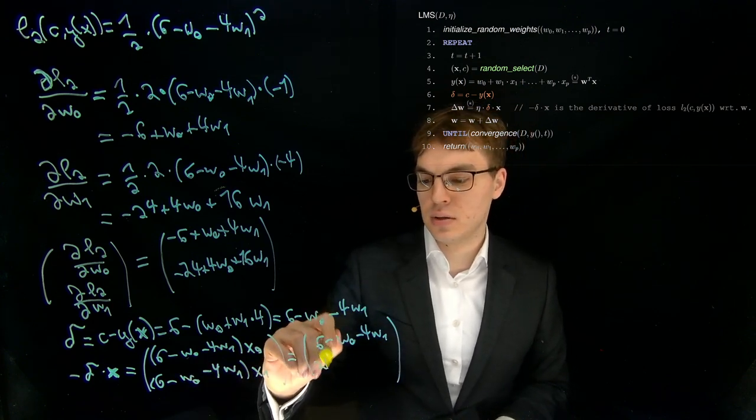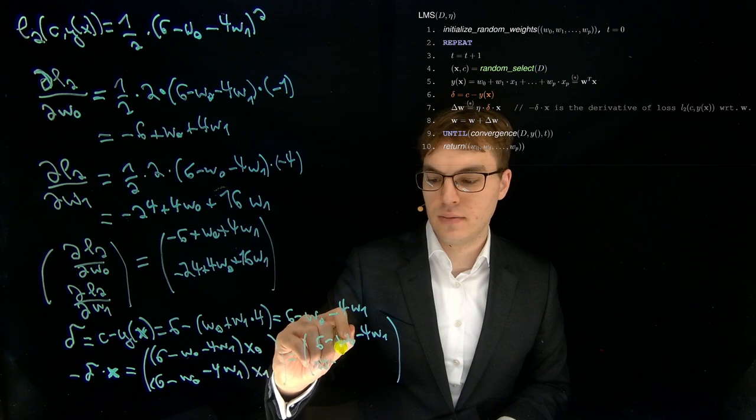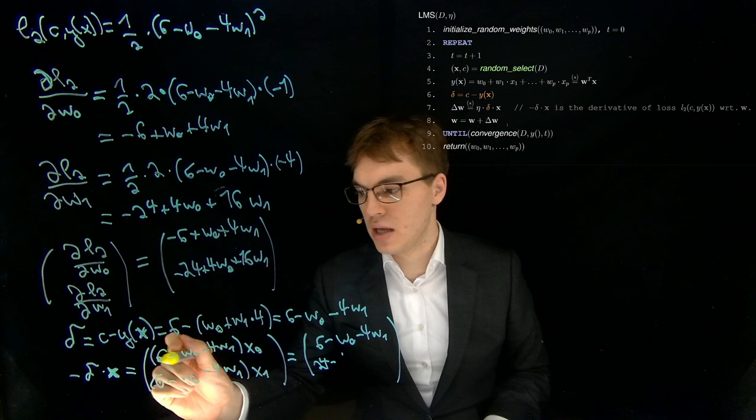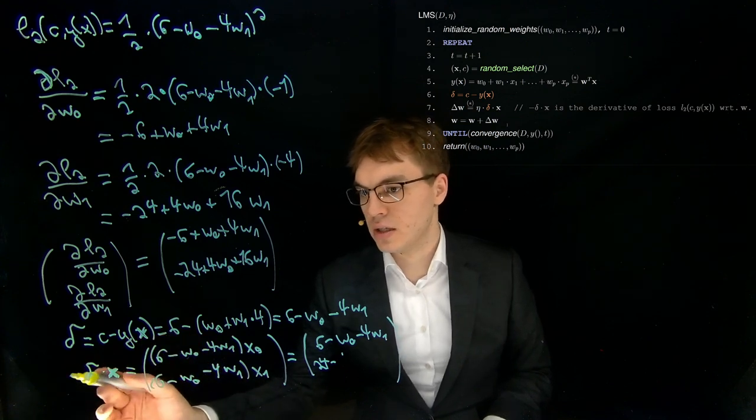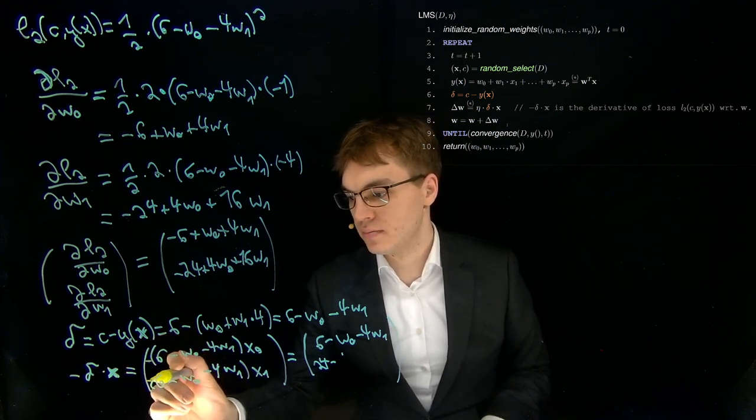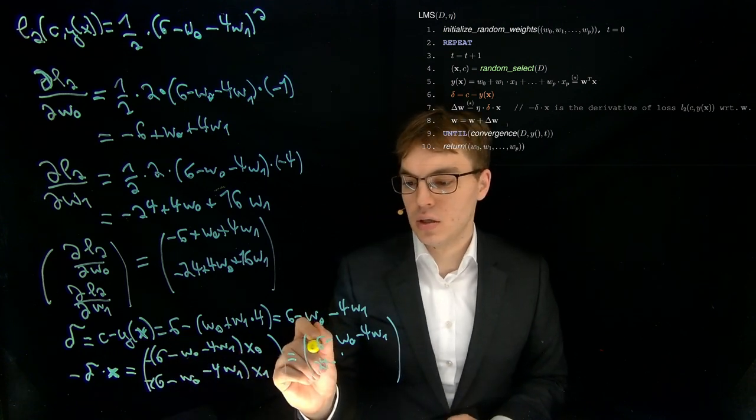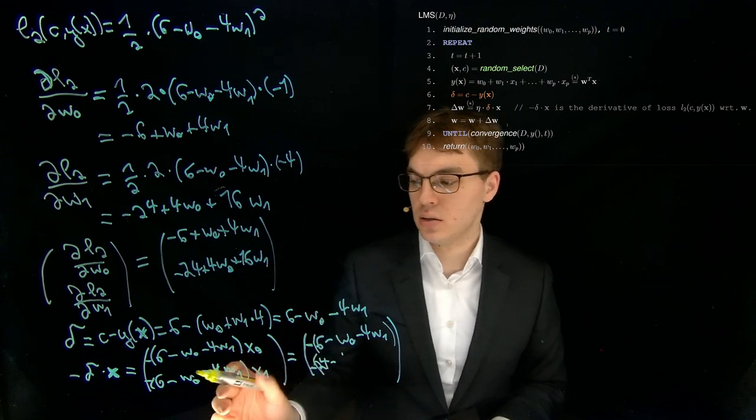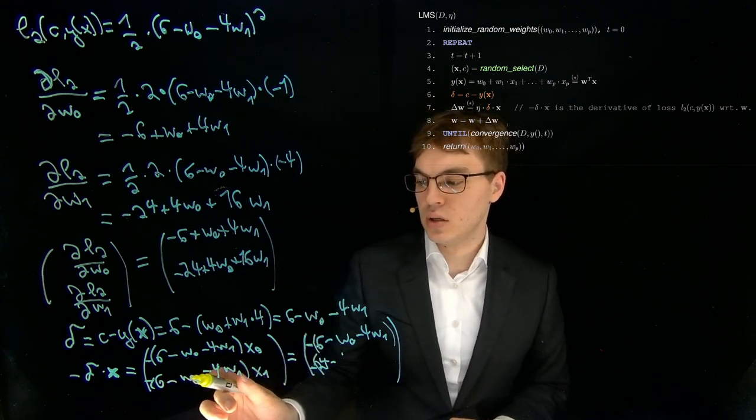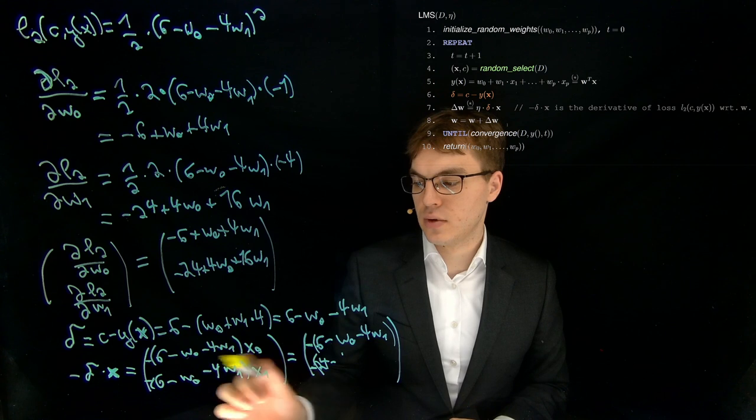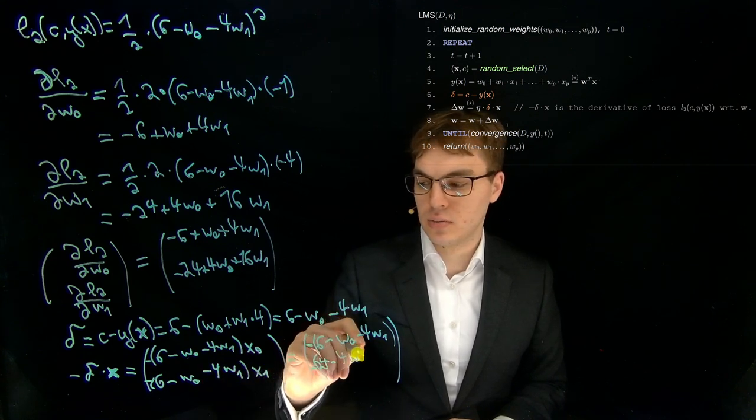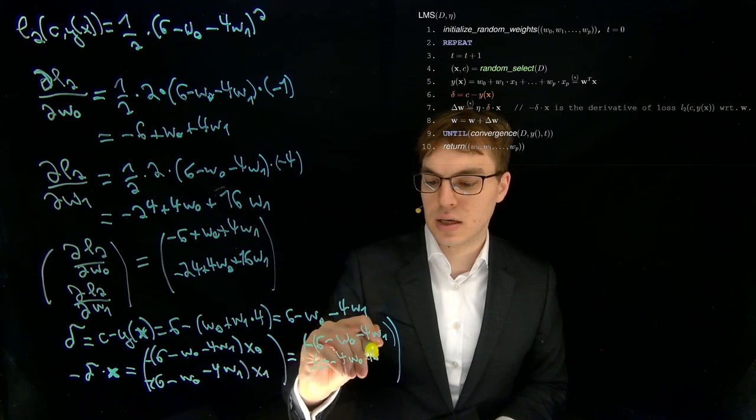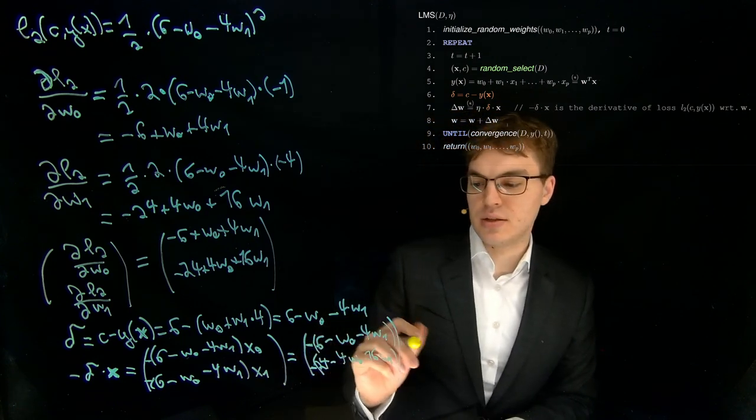And if we take four here, we get 24 minus, I messed up. We are missing a minus here. So I quickly cheated in here. So 24 minus four times W zero minus 16 times W one. And now let me apply this negation.